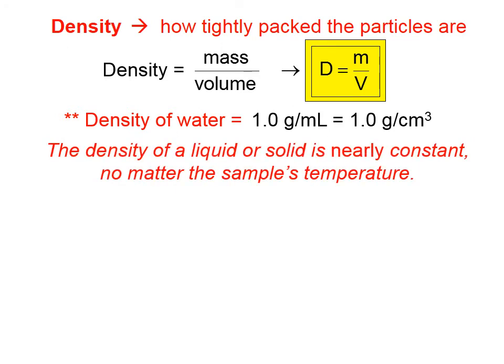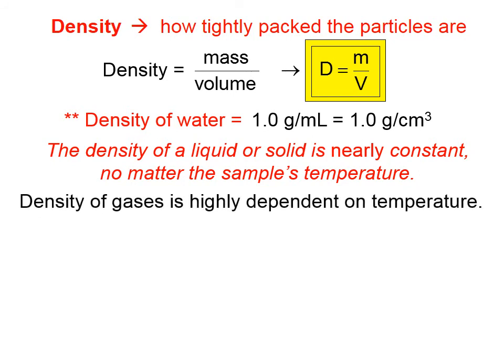The density of a liquid or a solid is nearly constant. It does vary slightly with temperature, no matter what the sample's temperature is. That's why you can go on the internet and you can look up the density of aluminum. You can look up the density of iron and so forth. Because those densities, no matter what the temperature, don't vary that much.